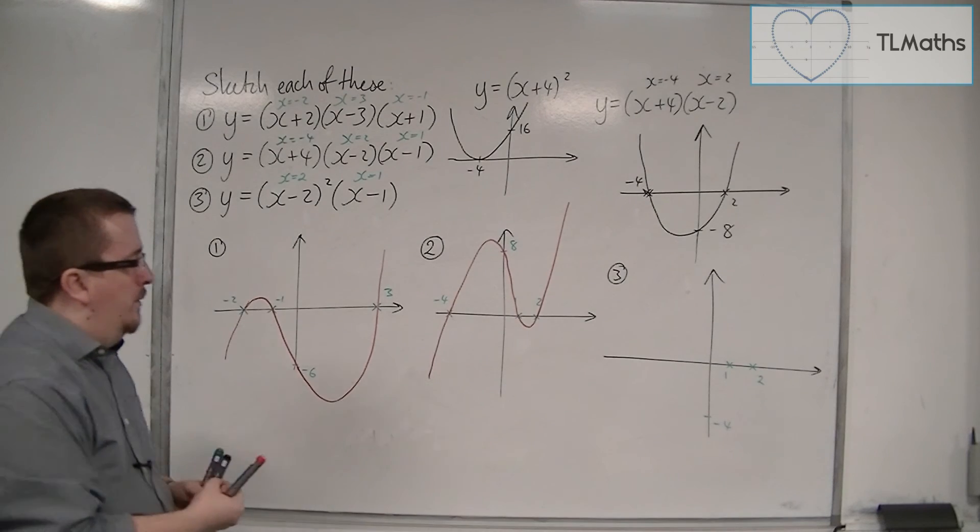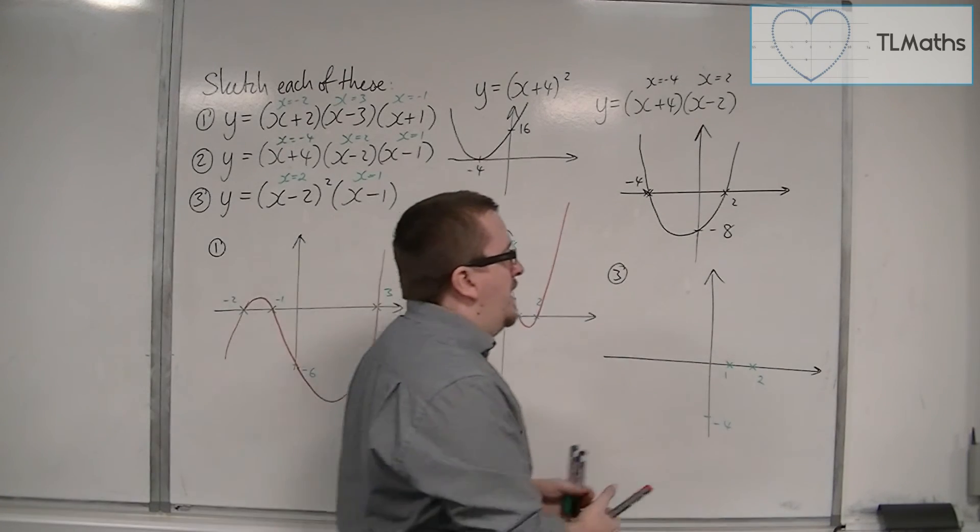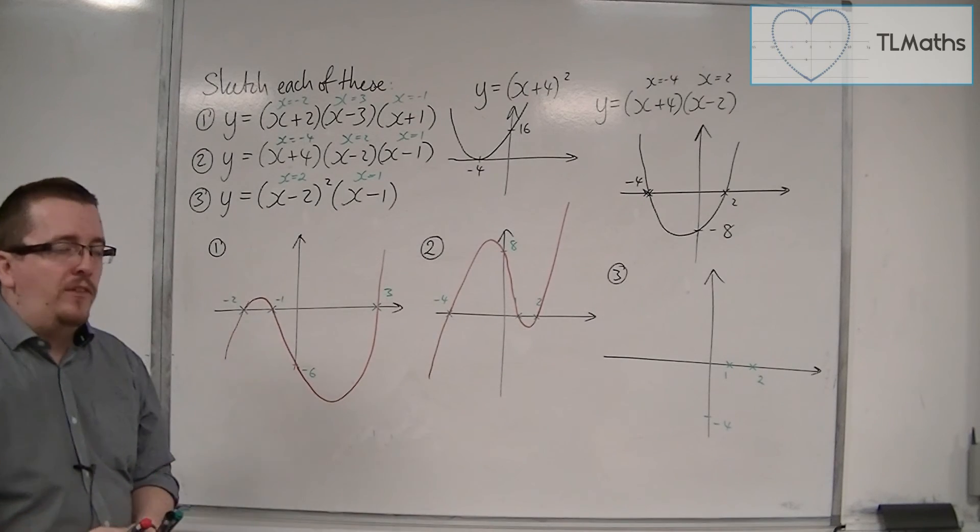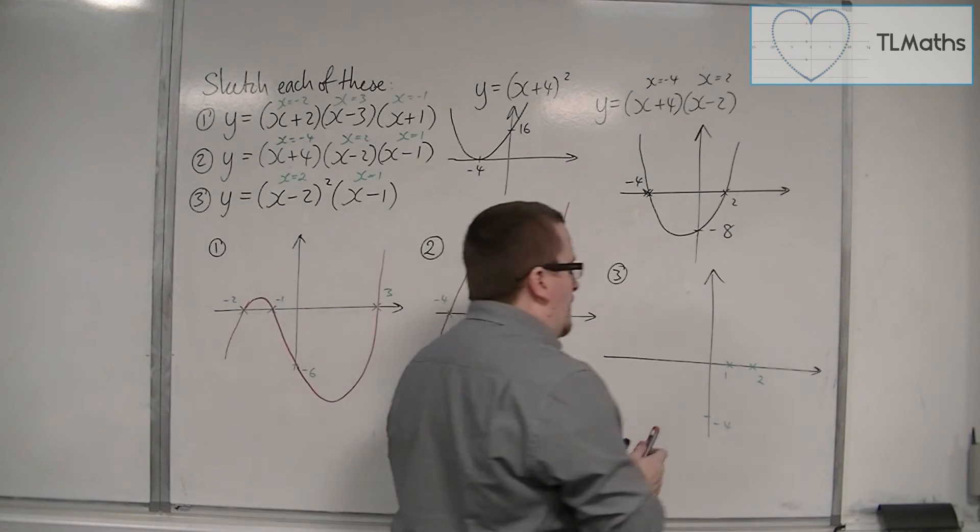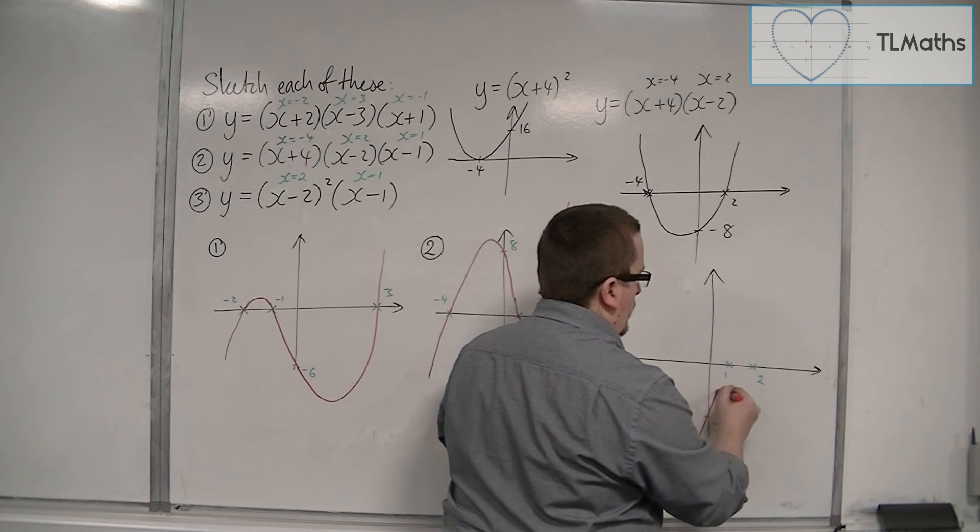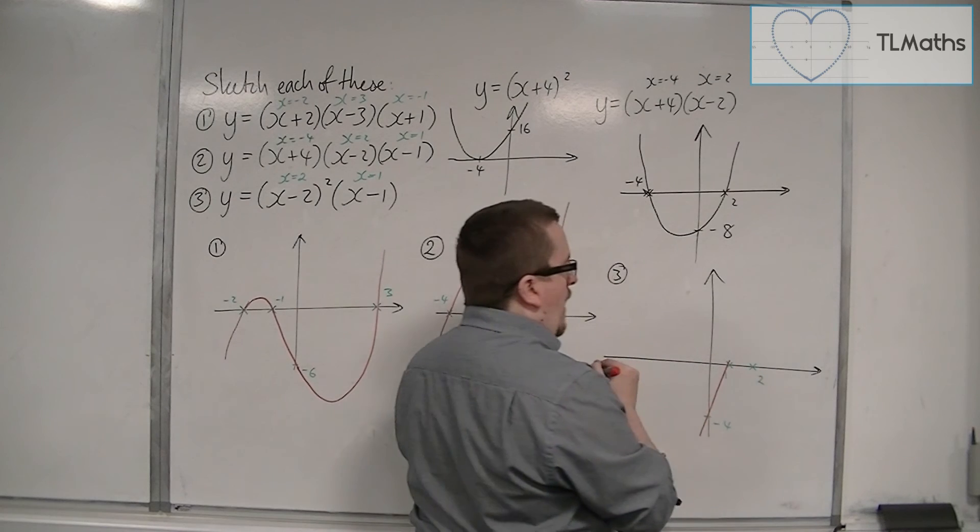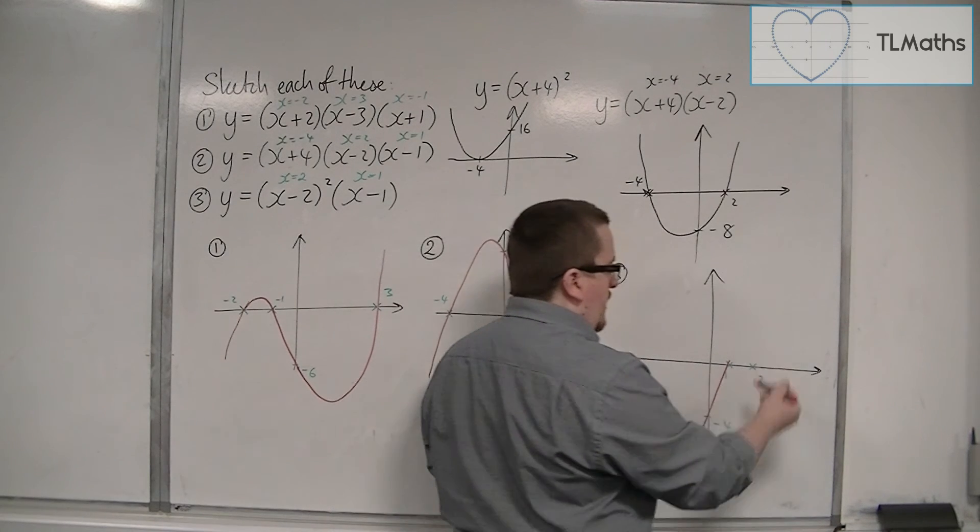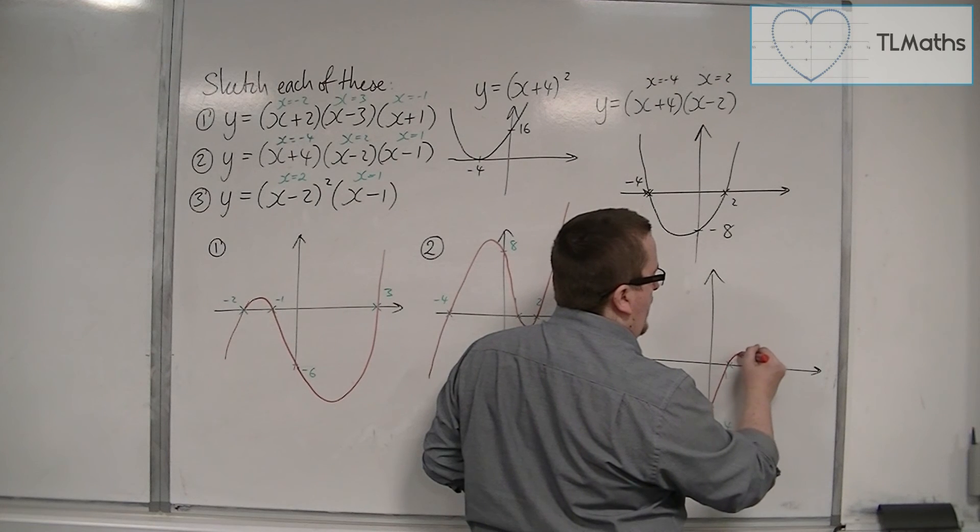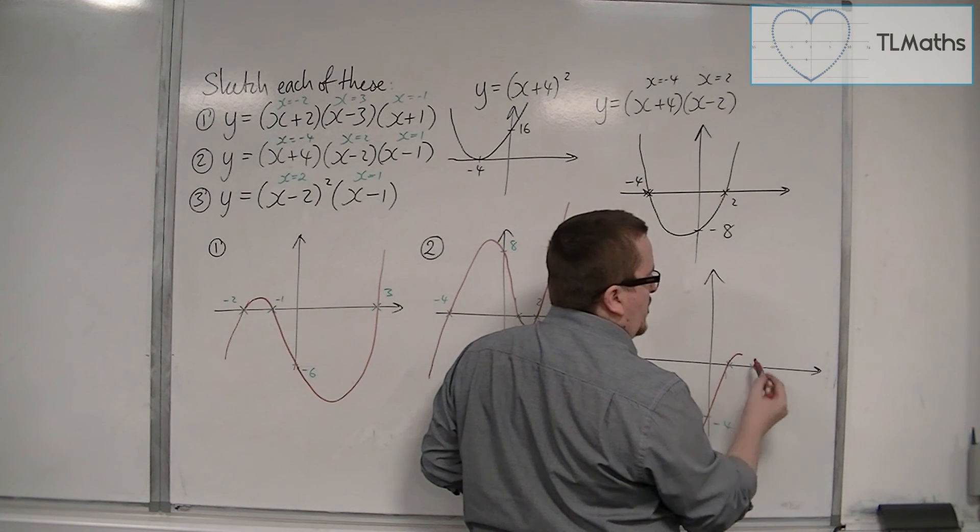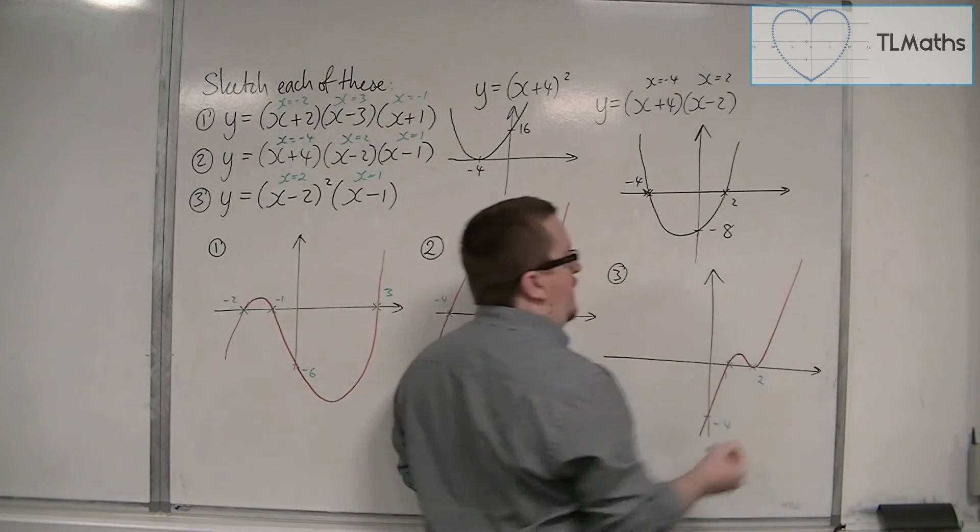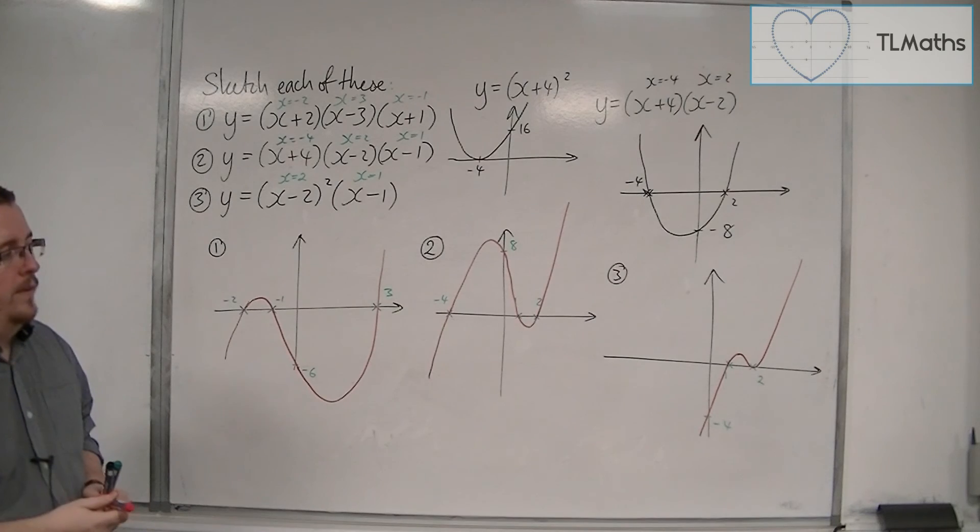So if the curve is starting in the bottom left, as it must do again because we're going to have a positive x cubed, starting in the bottom left, it must go through minus 4, go up through 1, and then it must turn around and brush the x-axis at 2.